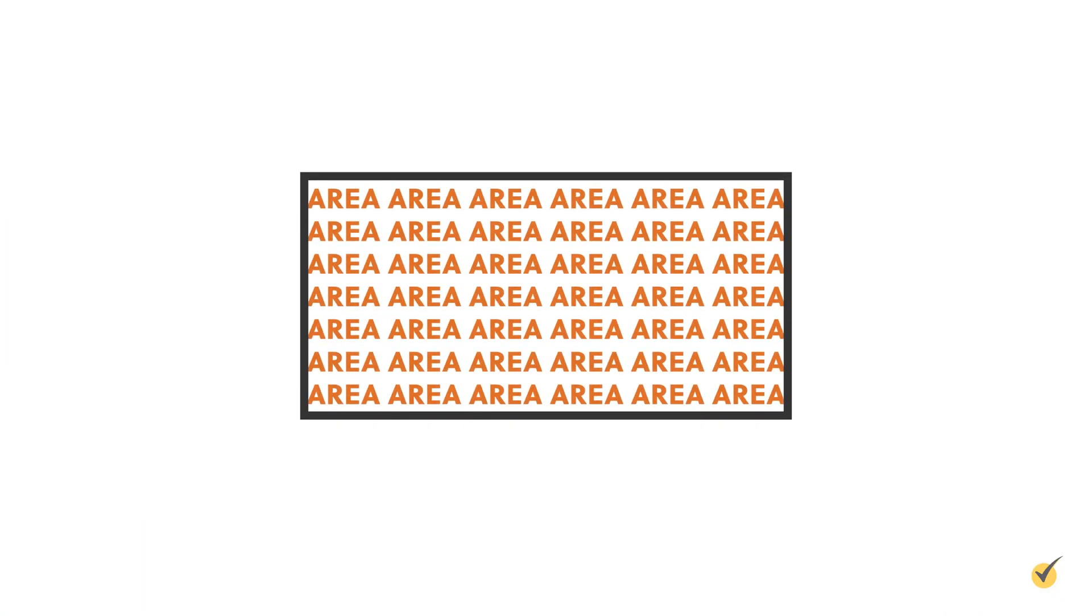Welcome to this video on finding the area and perimeter of a shape. Area measures the surface of a shape and perimeter measures the distance around the outside of a shape. We'll take a look at how to calculate each, but let's start with perimeter.